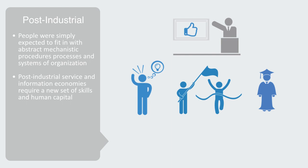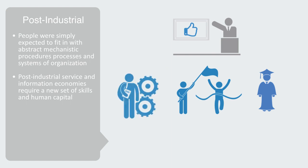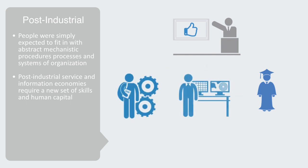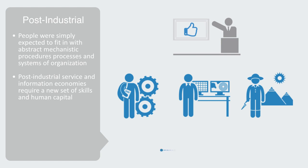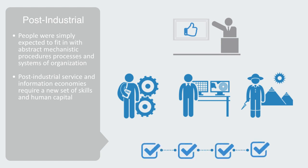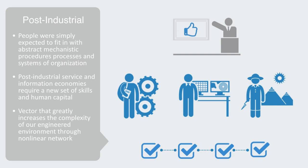To build this next generation of complex socio-technical systems requires engineering based upon a diverse skill set and cross-domain competencies in both technical domains, social science and humanities, and inter-domain engineering teams. Again, this is another vector that greatly increases the complexity of our engineered environment through an increase in the non-linear networked interactions between the social and technical domains.